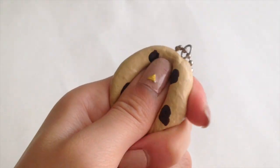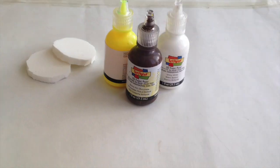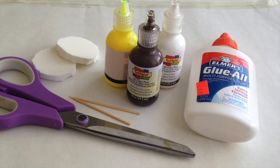So now let's make our cookie. You will need two circular makeup sponges, yellow, brown, and white puffy paint, some glue, scissors, and toothpicks.